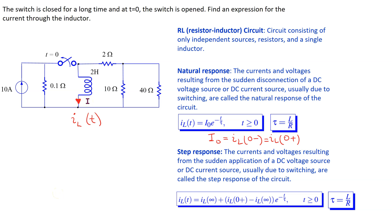In this video, we will look at how to solve for the current through an inductor in an RL circuit. Recall that an RL circuit is a circuit consisting of only independent sources, resistors, and a single inductor. The expression for the current through the inductor depends on whether we are solving for the natural response or the step response. The natural response is the currents and voltages resulting from the sudden disconnection of a DC voltage or current source, whereas the step response is the currents and voltages resulting from the sudden application of a DC voltage or current source due to switching.